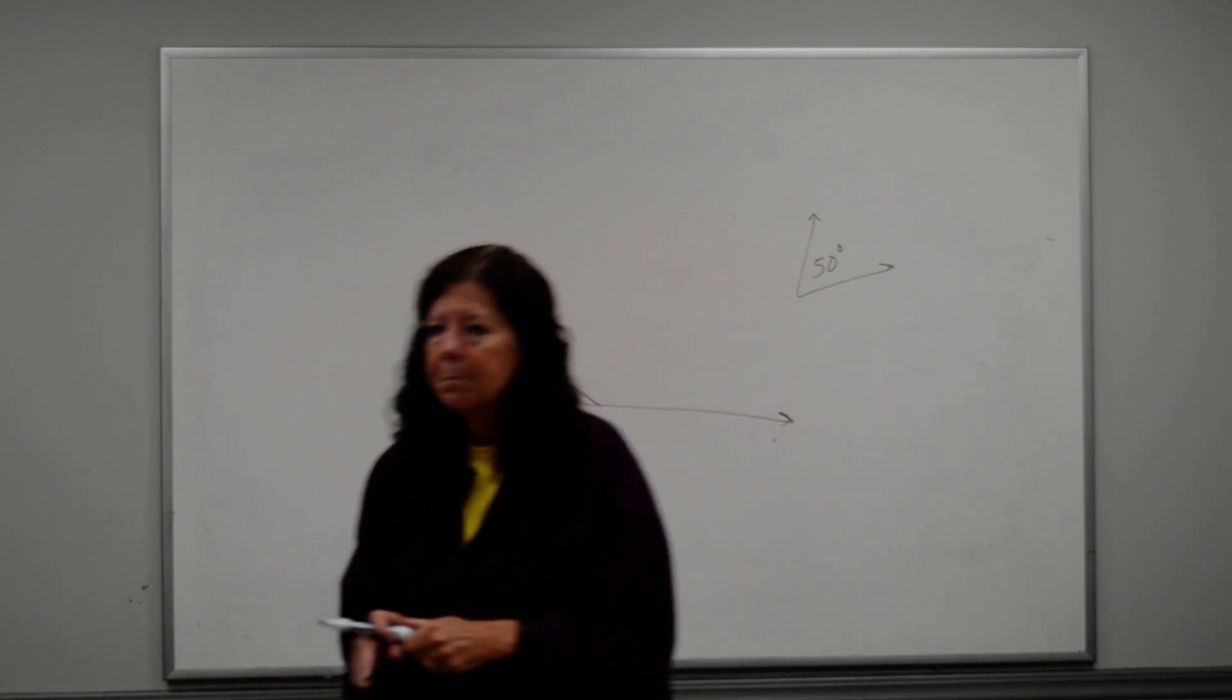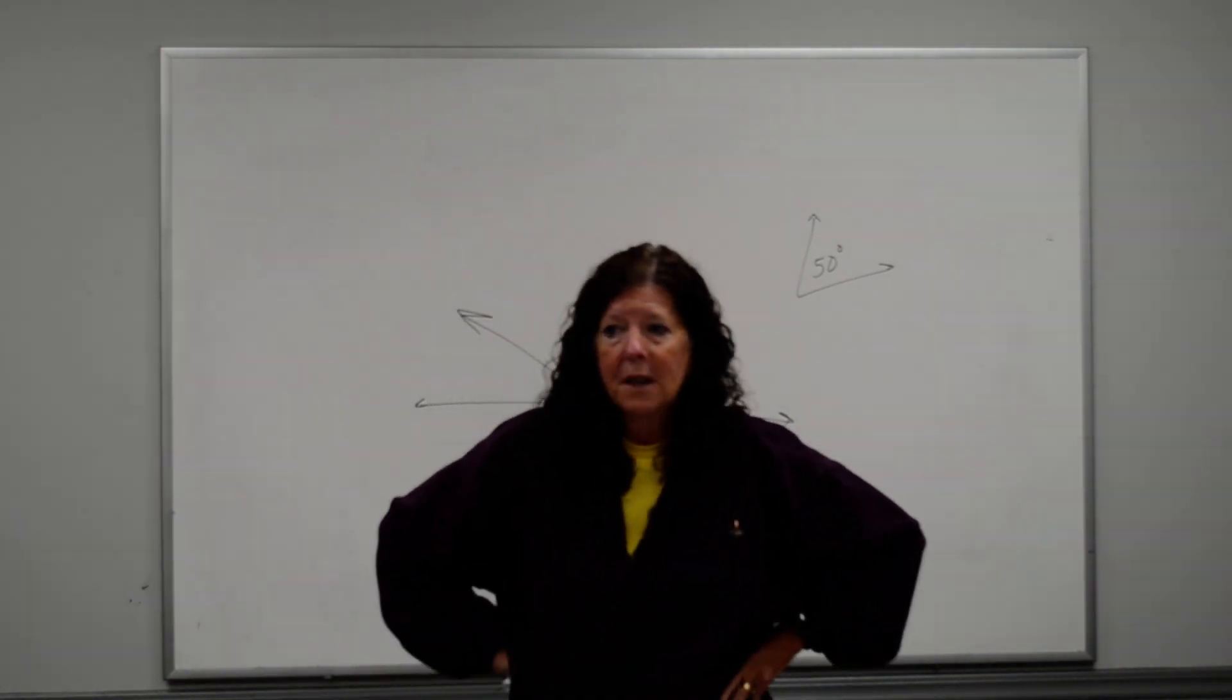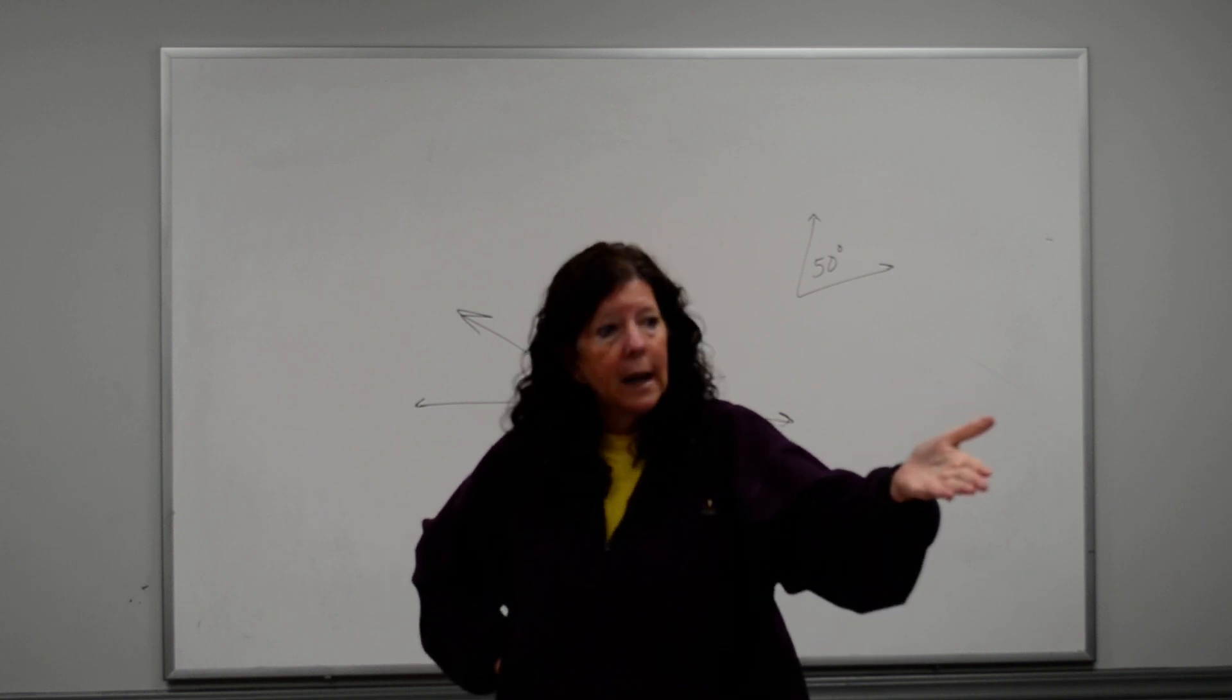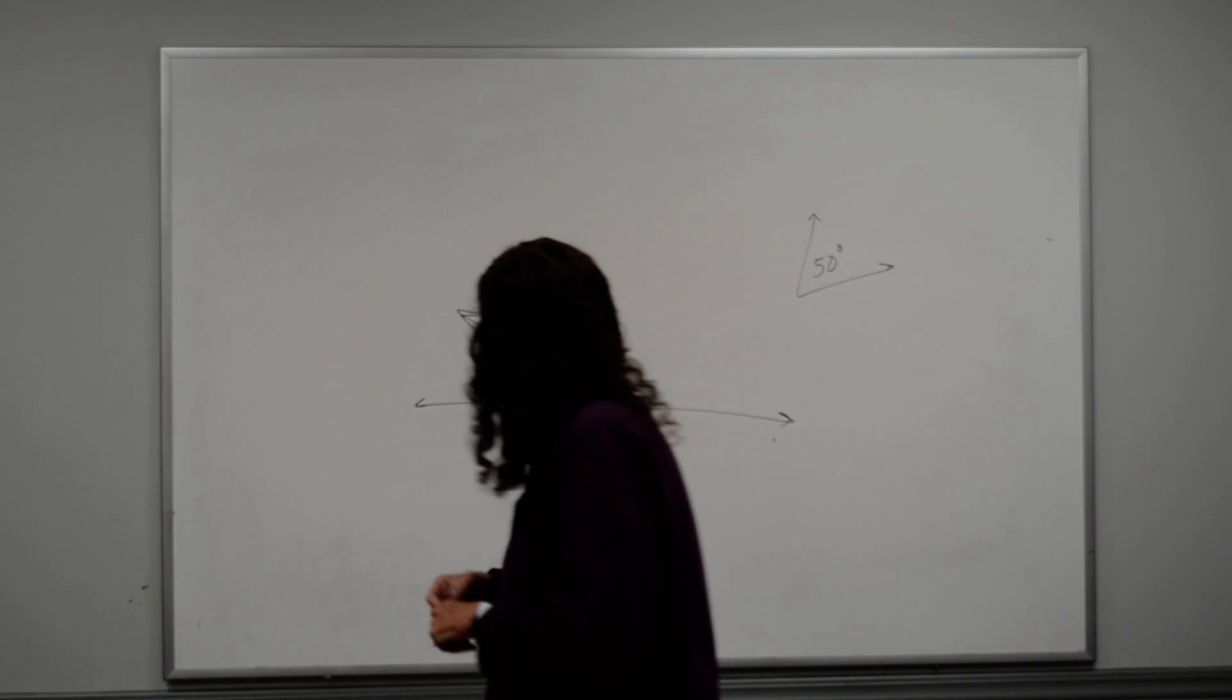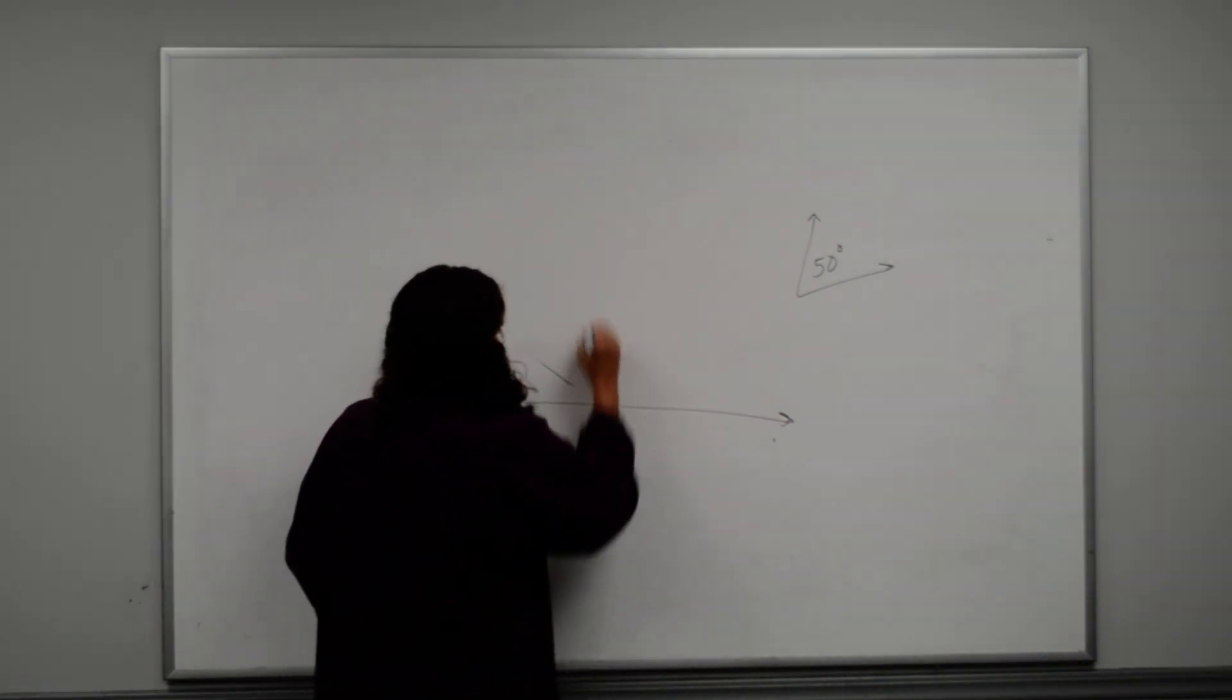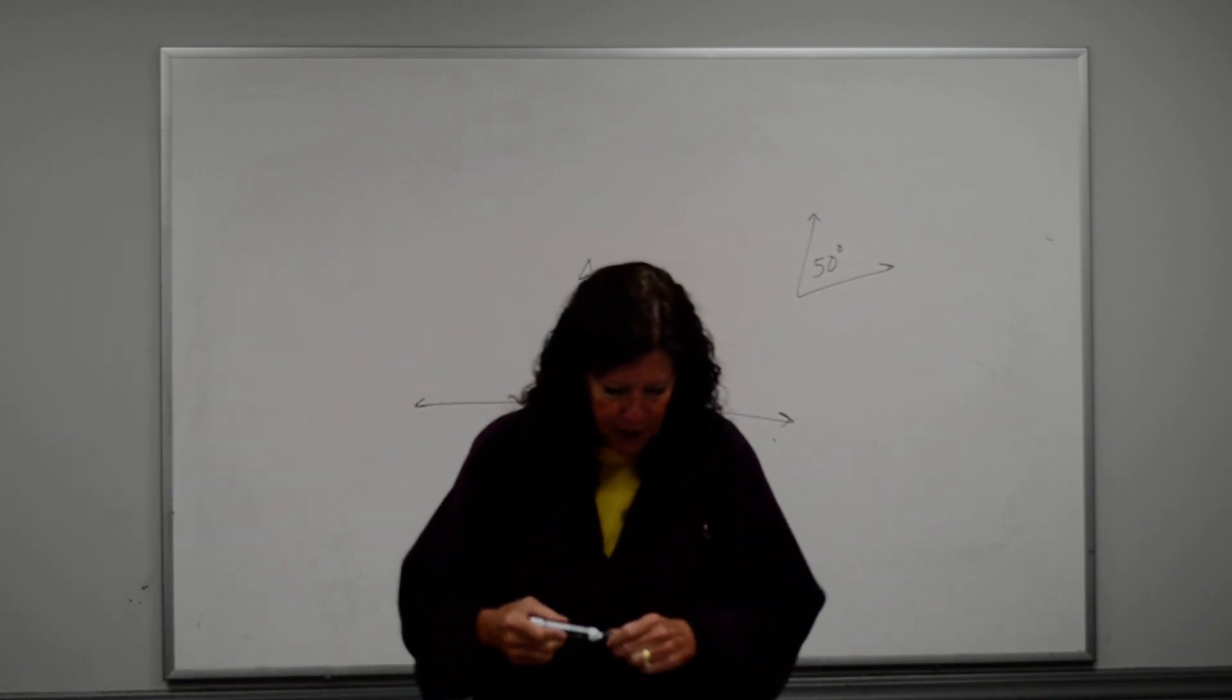Perpendicular lines, what does that mean? What kind of angle do they form? Perpendicular lines. Right angle. A right angle or a 90-degree angle. Okay? So you can have perpendicular, you can have it intersecting, or you can have like a line in a line segment, and it just forms a right angle. Okay? So make sure you understand all that.